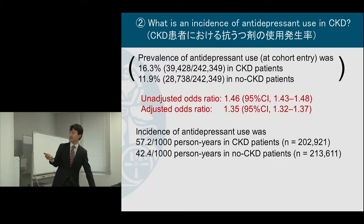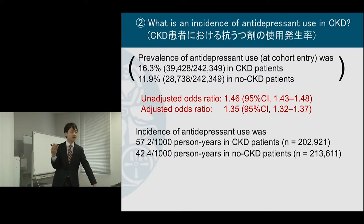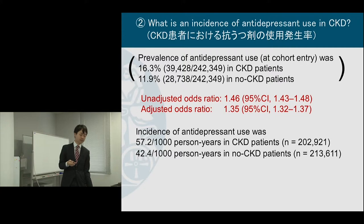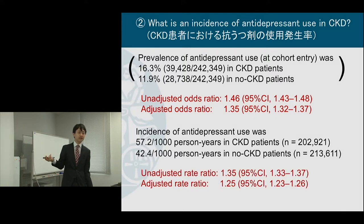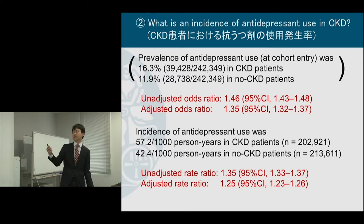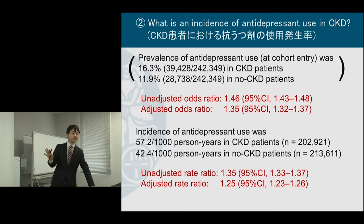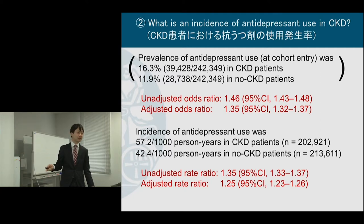I also did adjusted analysis using logistic regression for prevalence. The adjusted odds ratio was 1.40 before adjusting, and 1.35 after adjusting for confounding factors like diabetes, cancer, and lifestyle-related factors such as BMI and smoking history. I also did survival analysis using Poisson regression — though Cox regression could be used as well — giving results of 1.35 and 1.25. I believe the crude values are more informative, but reviewers and editors in medical journals prefer adjusted analyses, so it's not bad to show them.